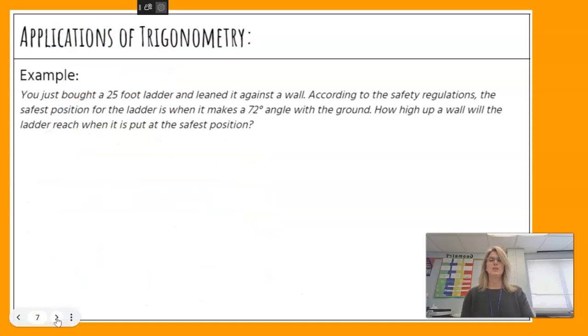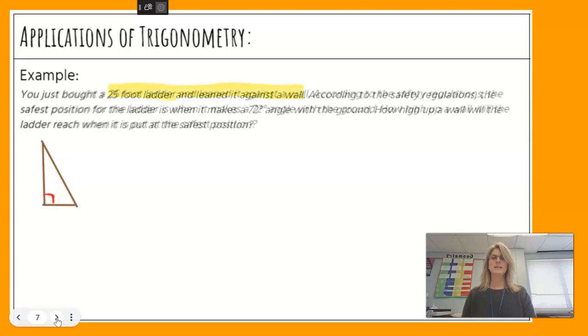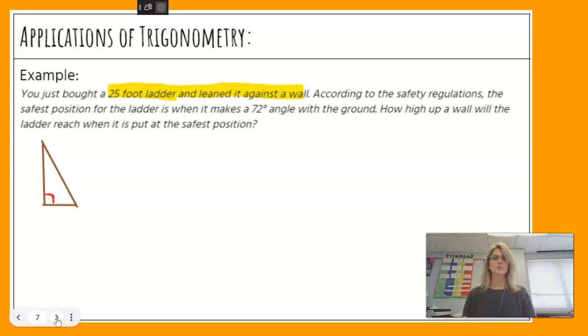Okay, last one. You bought a 25-foot ladder and leaned it against the wall. According to the safety regulations, the safest position for the ladder is when it makes a 72-degree angle with the ground. So how high up a wall will the ladder reach when it is put in the safest position? So I'm going to sketch my right triangle again, and let's highlight some words that we need.